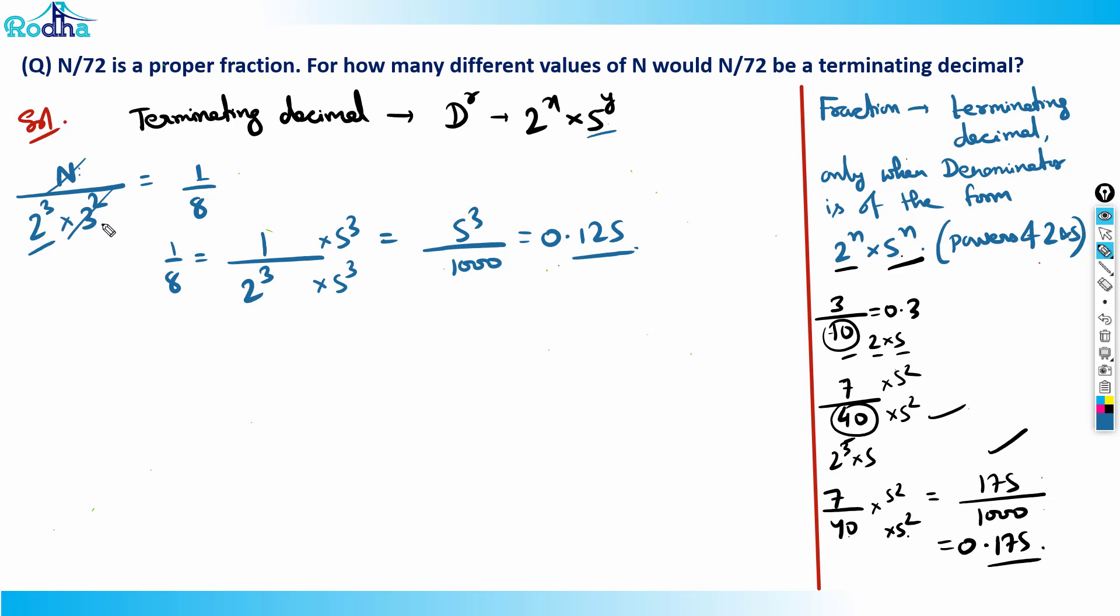So basically, if N will cancel 3², then it will become a terminating decimal. Now what are the values of N here?